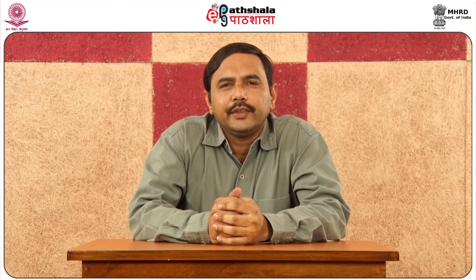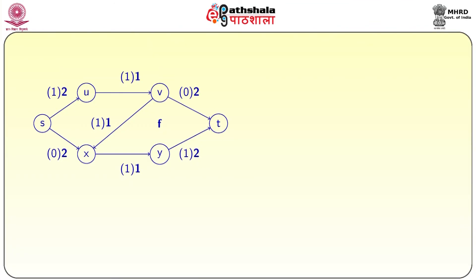We discussed the Ford-Fulkerson algorithm which produces a maximum feasible flow of a network. Now we are going to illustrate the Ford-Fulkerson algorithm with an example. In this network, the current flow value is just 1, but there is a possibility to increase the flow value — so it is not a maximum flow. We will apply the Ford-Fulkerson algorithm to find an f-augmenting path and finally find the maximum flow.